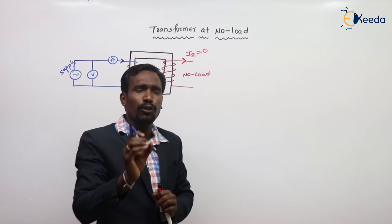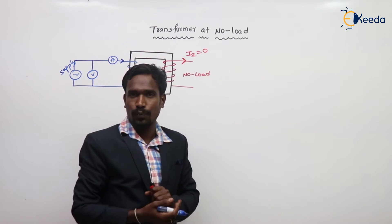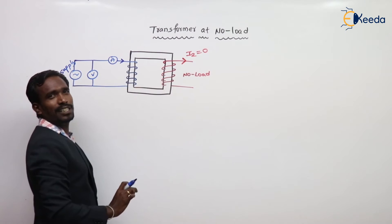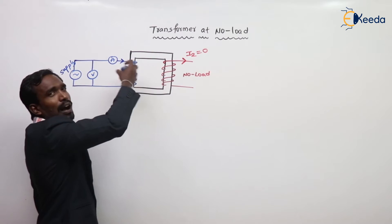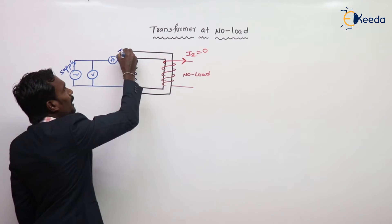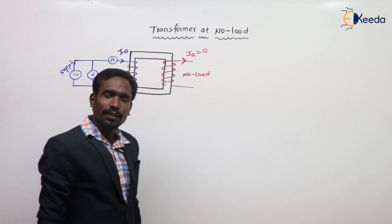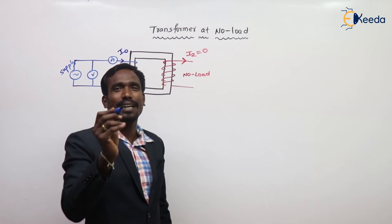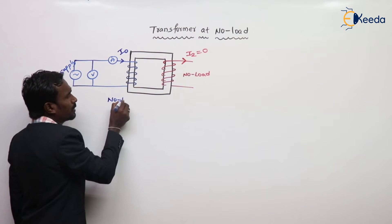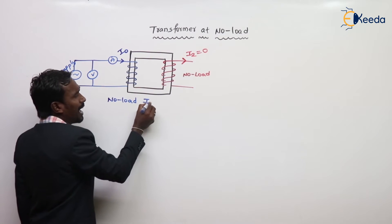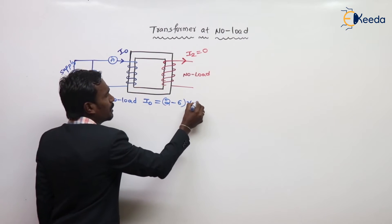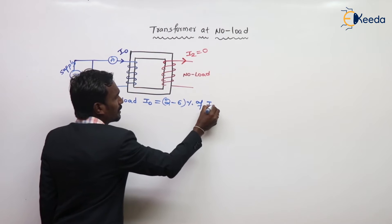In any device, if load is not connected, then current should not flow. But even under no load condition, the transformer draws a small current from the supply. That small current is called no load current I0. The no load current of the transformer I0 is equal to 2 to 6% of full load current.